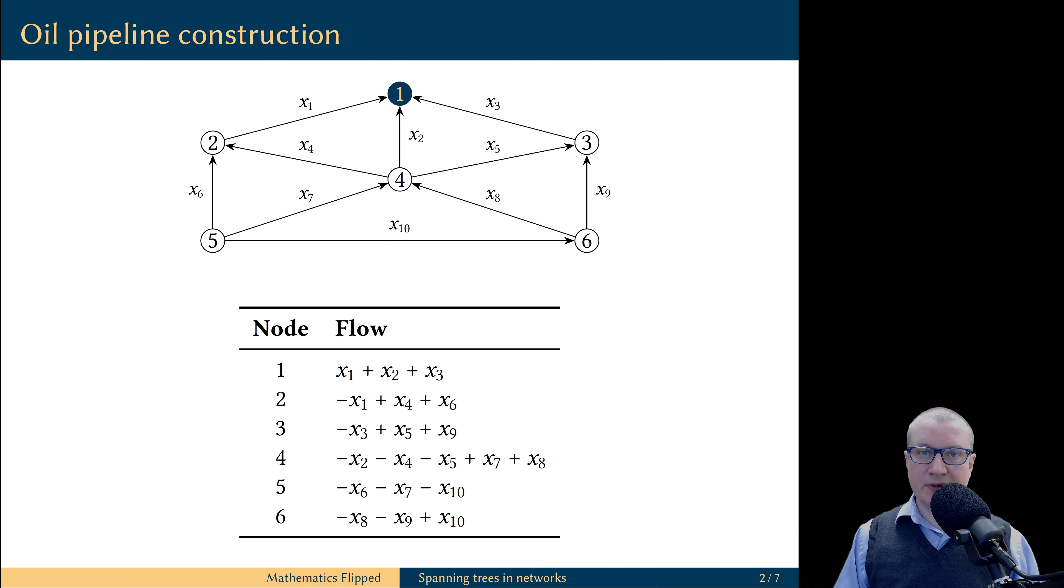If the flow comes with the plus sign, it means this is the flow into the node, and if the flow comes with the minus sign, it means it flows out of the node.